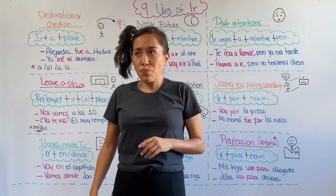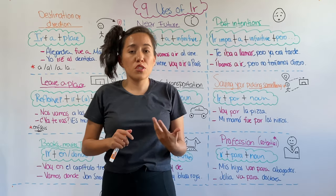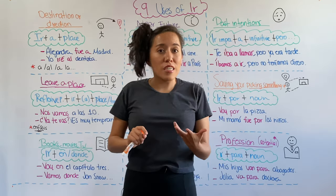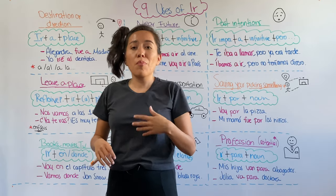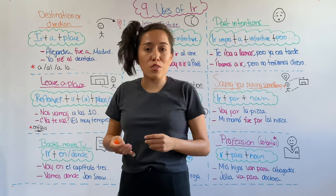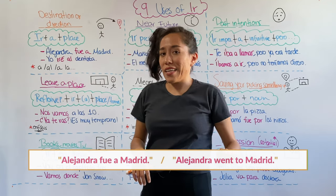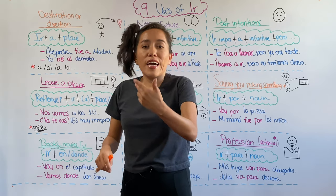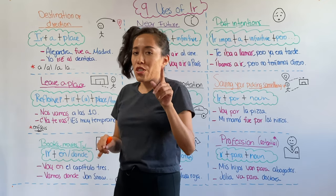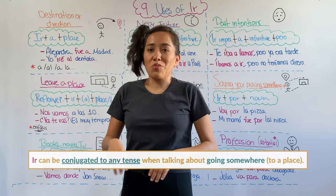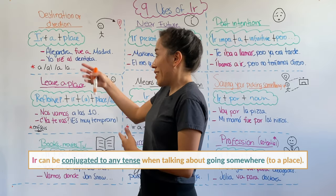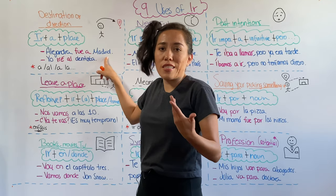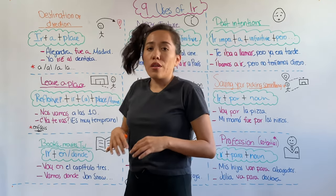In Spanish, we can use ir to talk about destination or direction — it's not about the journey, it's actually about the destination. To build this meaning, you're going to use ir plus a plus a noun that refers to the place you're going. For example, Alejandra fue a Madrid — Alejandra went to Madrid. Yo iré al dentista — I'll go to the dentist. You can conjugate ir to any tense you need, like past and future, and you can also use proper nouns, cities, states, countries, or common places.